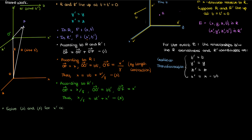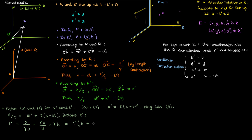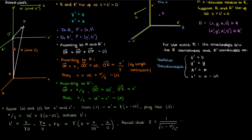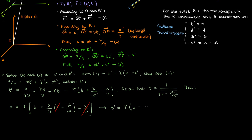Let's now solve equations 2 and 3 for our unknown quantities x' and t'. Starting with equation 2, we can directly get x', which turns out to be γ(x − vt). Plugging this into equation 3 and isolating t', we can take γ common to get γ times (t plus x over v times gamma squared minus x over v). Since 1 over gamma squared equals 1 minus v squared over c squared, expanding out the middle term causes the two x over v terms to cancel, leaving us with the final expression for t'.